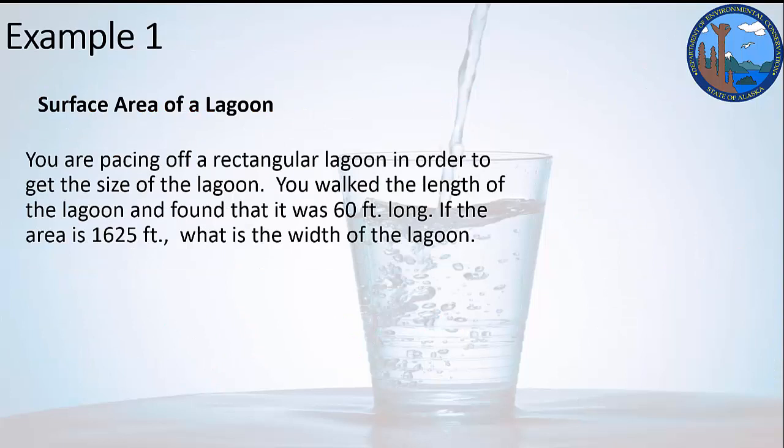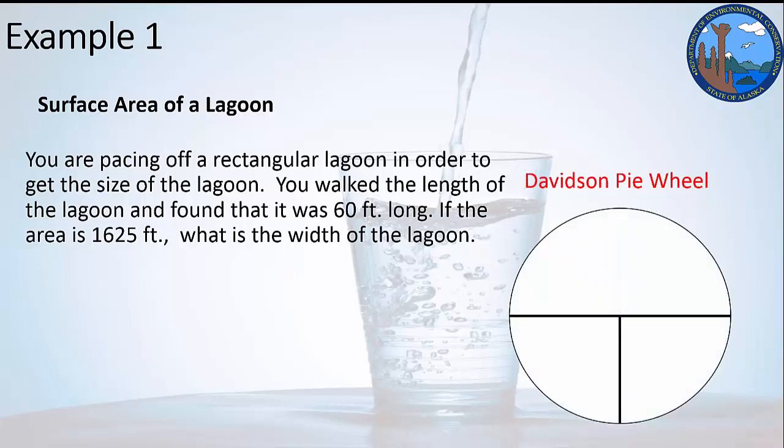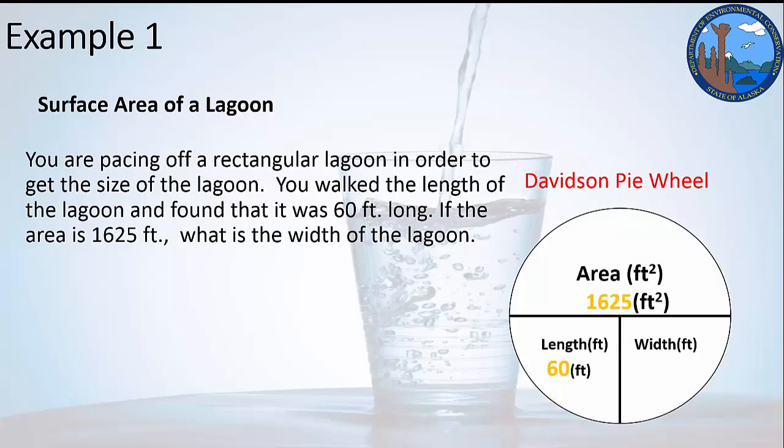So the first example is surface area of a lagoon. If you're pacing off a rectangle lagoon in order to get the size of the lagoon, you walk the length of the lagoon and found that it was 60 feet long. If the area is 1,620 feet, what is the width of the lagoon? Well, if we draw our Davidson pie wheel out and we stick in our variables, then we can stick in the known information and that way you would divide the area by the length. If we were going to work with it in the formula scenario, we'd have to divide this side by length, divide this side by length, and then we'd end up with a formula that looked like this. We divide the 1,620 by the 60, we'll get 27 no matter what we do, whether we use the formula or the Davidson pie wheel.